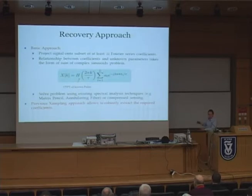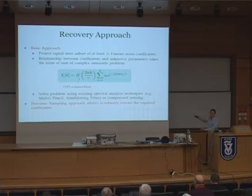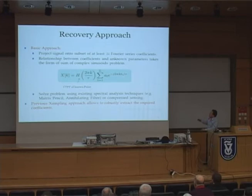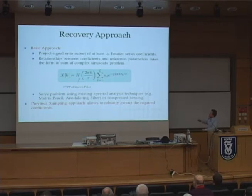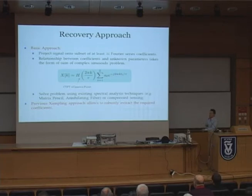The basic approach of these schemes is to project the signal onto a subset of at least 2L Fourier coefficients, where L is the number of pulses. Once we do this projection, we can show that these coefficients relate to the unknown signal parameters — amplitudes and delays — in the form of a complex sinusoid problem. This is a problem solvable using mature techniques from the spectral analysis field, or alternatively using ideas from compressed sensing.